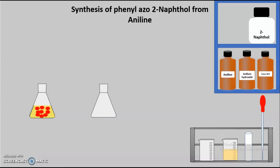Once the crystals of phenyl azo-2-naphthol are separated, we have to keep that particular mixture in an ice bath for about 10 minutes with occasional stirring, then filter the solution and wash with water. Once we have prepared the crystals of phenyl azo-2-naphthol, the next step is to carry out the recrystallization and drying of our product.